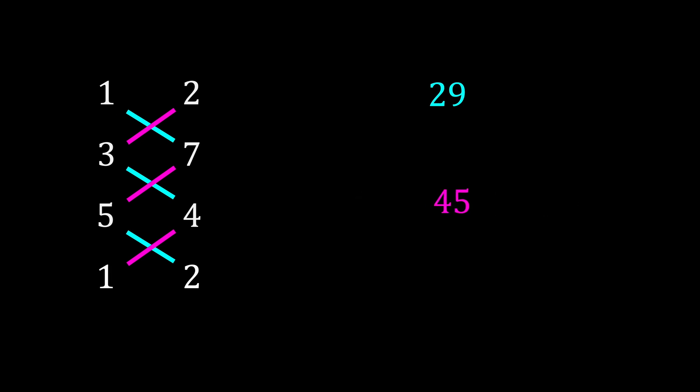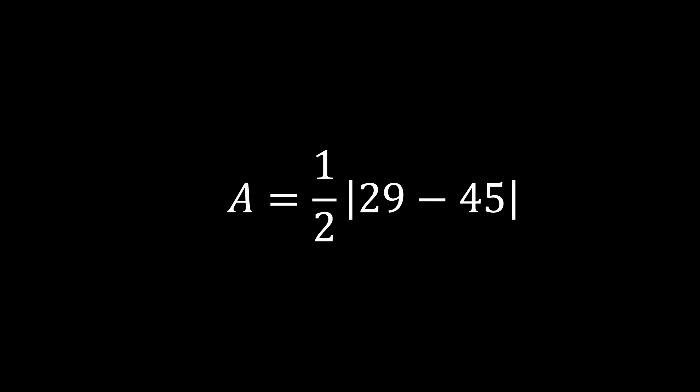The next step is to subtract these results from one another. If the result is negative, we use absolute value symbols, these vertical straight line symbols, to make it positive. Here the difference is 16, so we halve it to get 8. That's the area of the triangle.